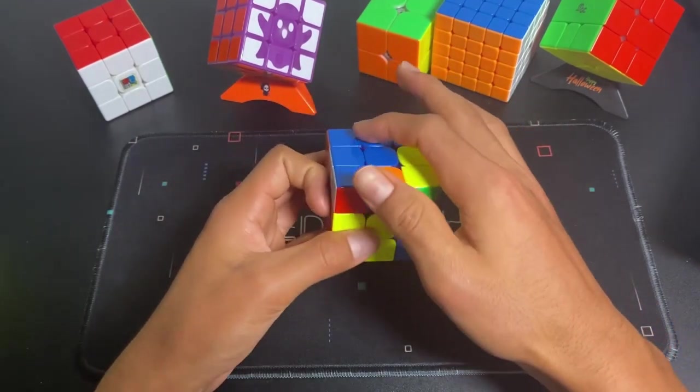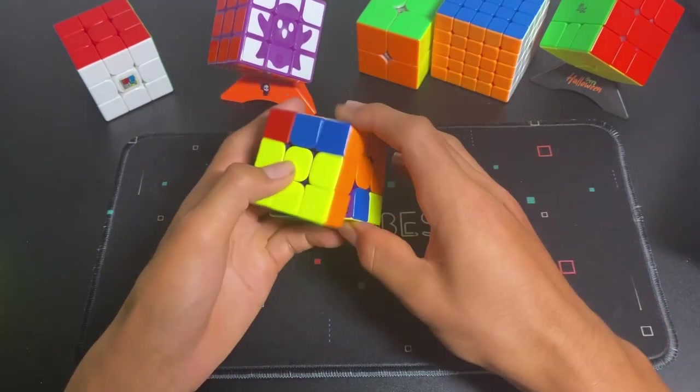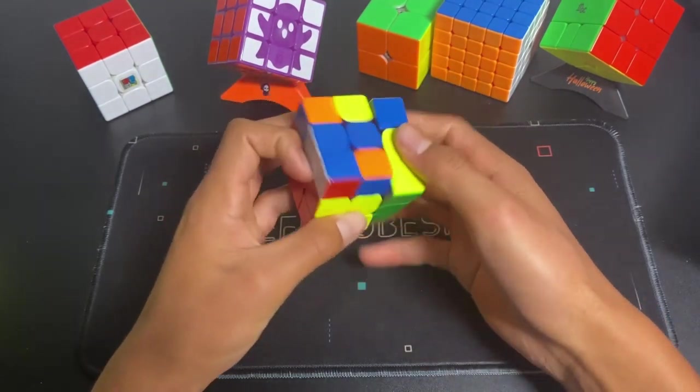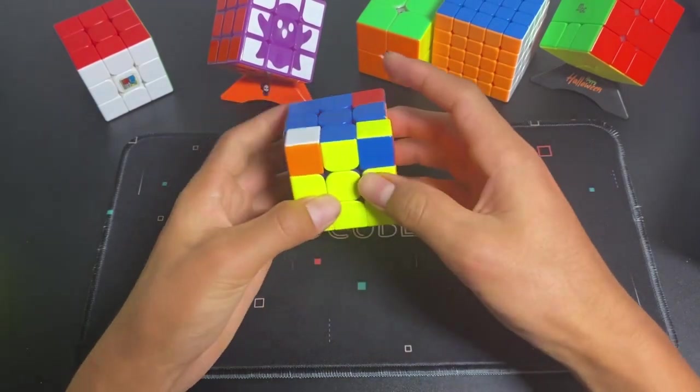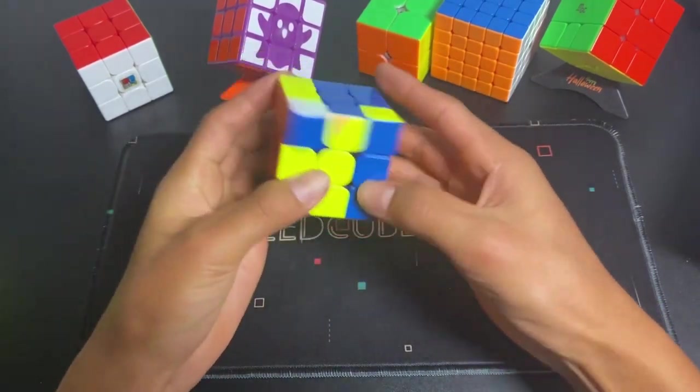So say you have this, where there's an L. You can do a sledge. Instead of doing the normal insert where you get a bar, you can do a sledge to get a cross on top, which is an easier OLL, obviously.